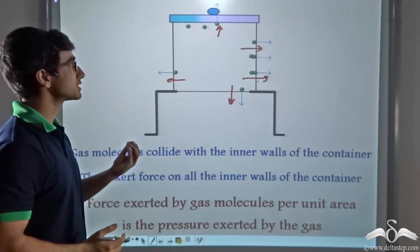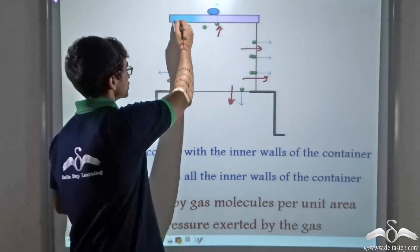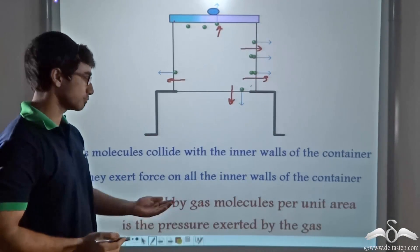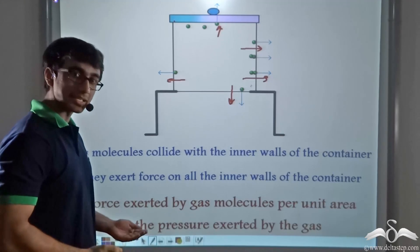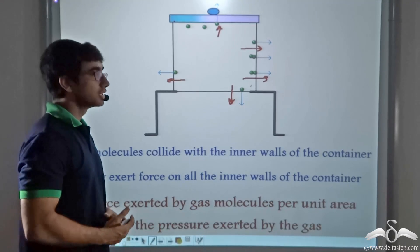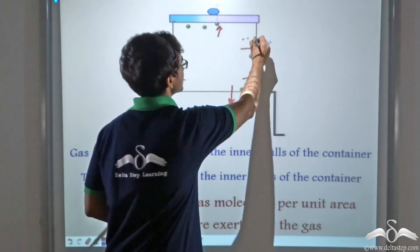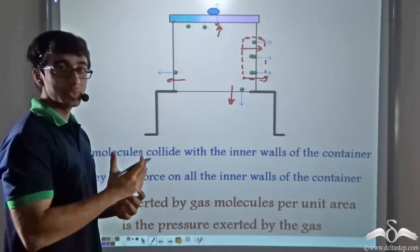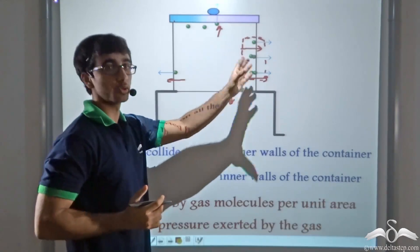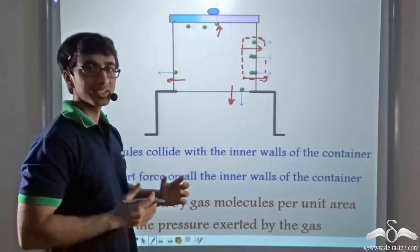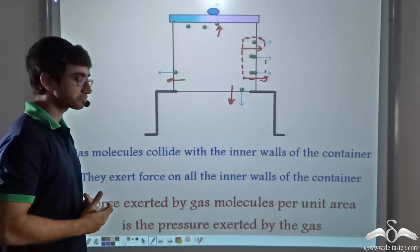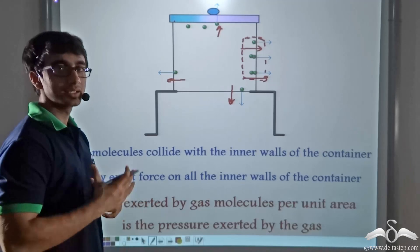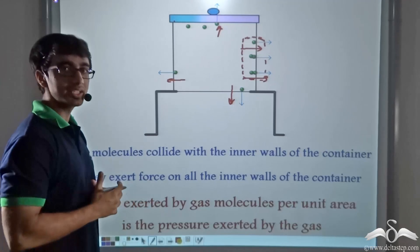Since these molecules are exerting a thrust and since these walls have a definite area, we can say that the force exerted by the gas molecules per unit area will be the pressure exerted by the gas. If we consider a unit area, then the gas molecules exerting a force on that area equals the pressure exerted by the gas molecules. So inside any container, a gas that is kept exerts pressure on the inner walls.